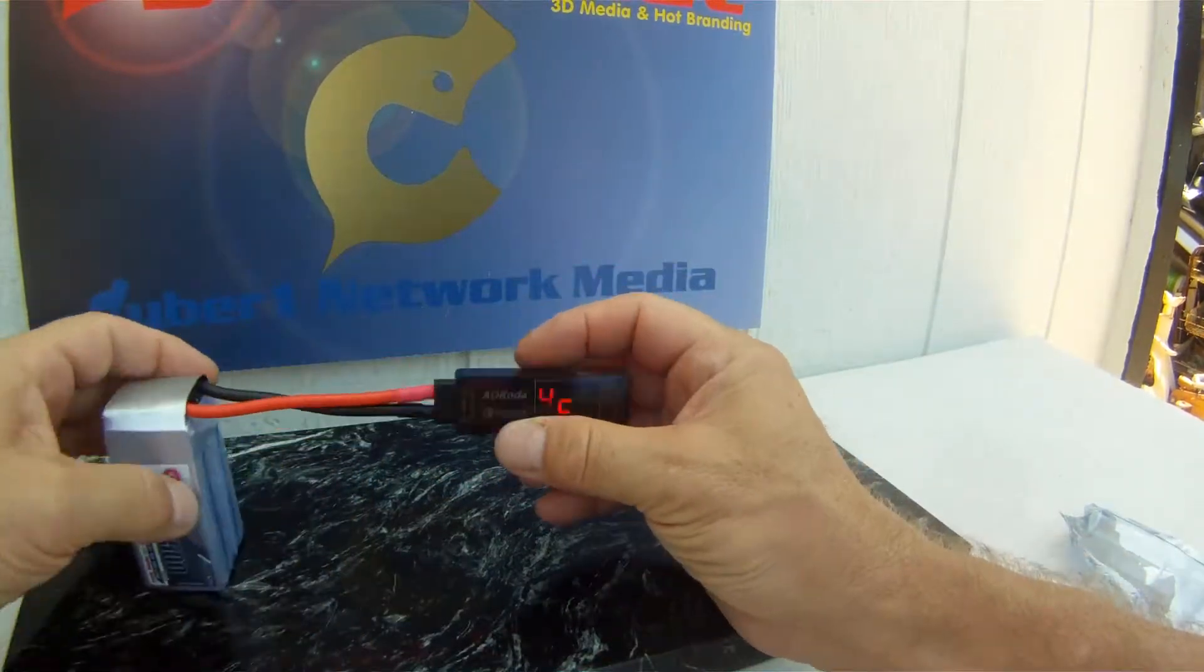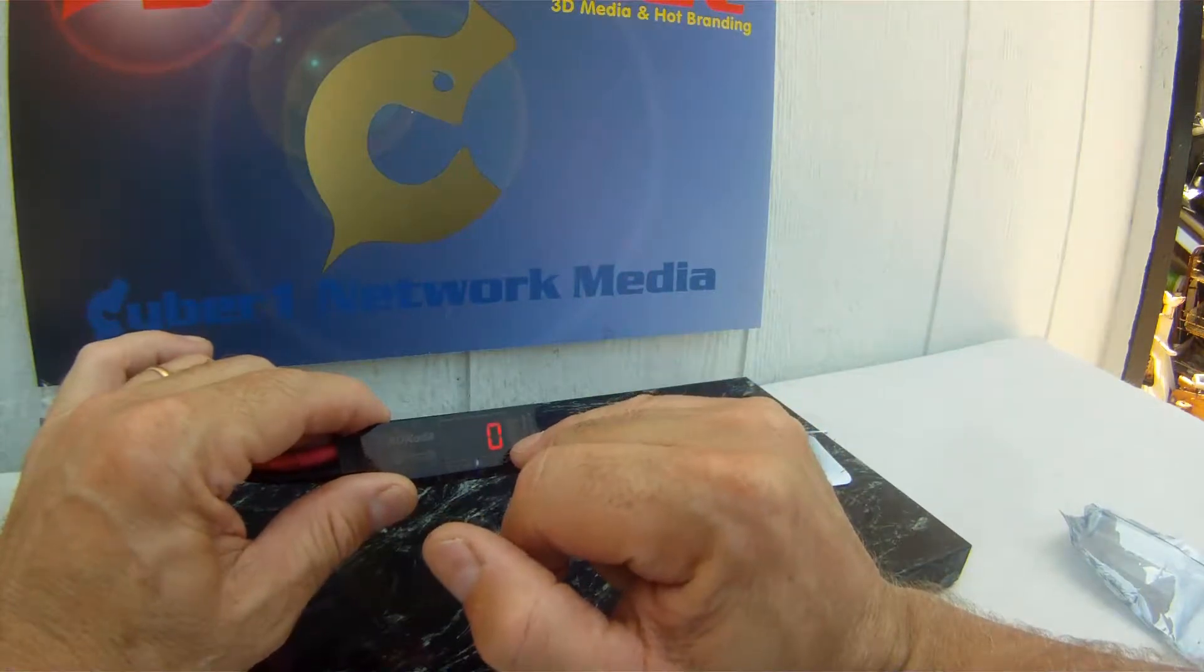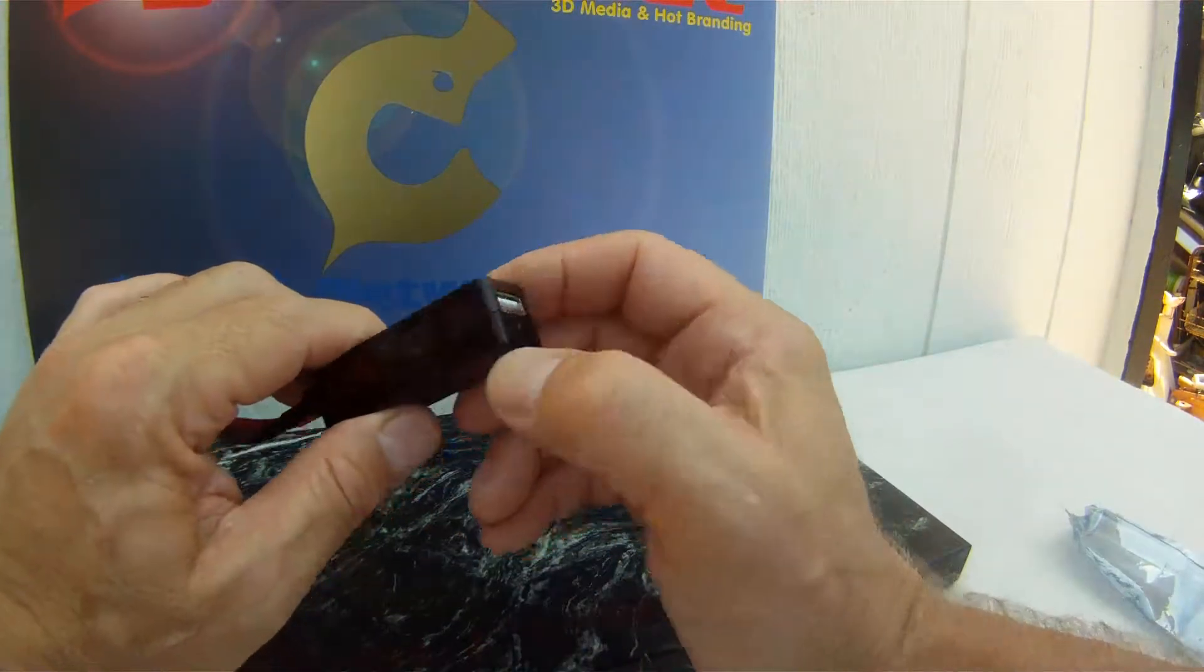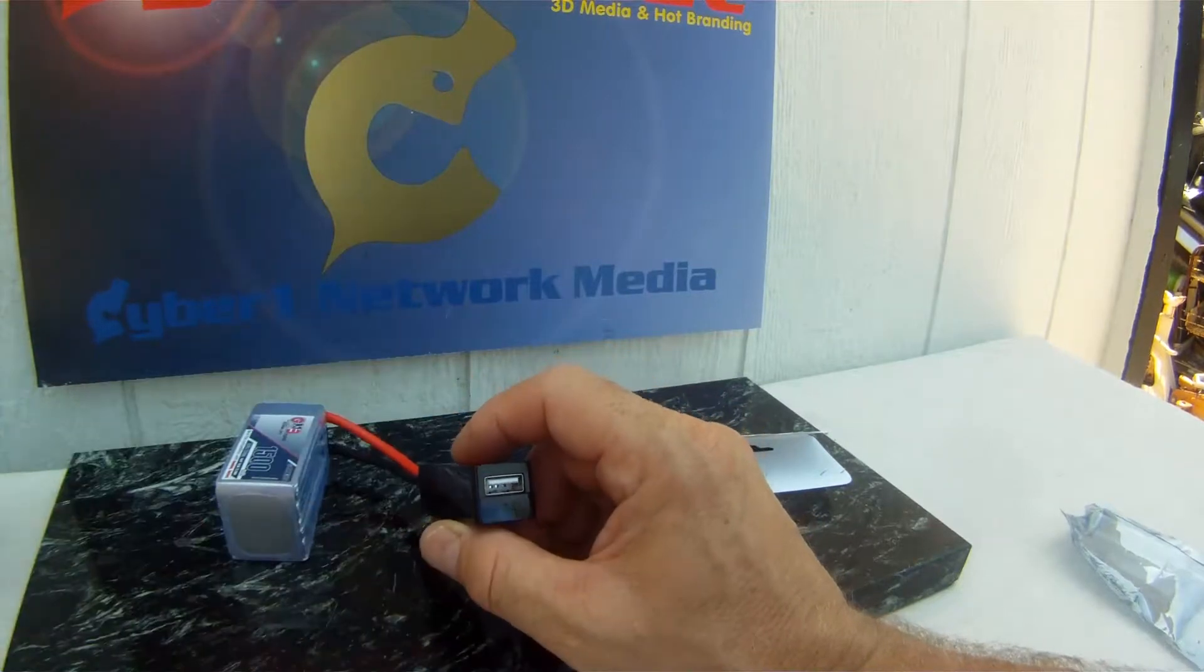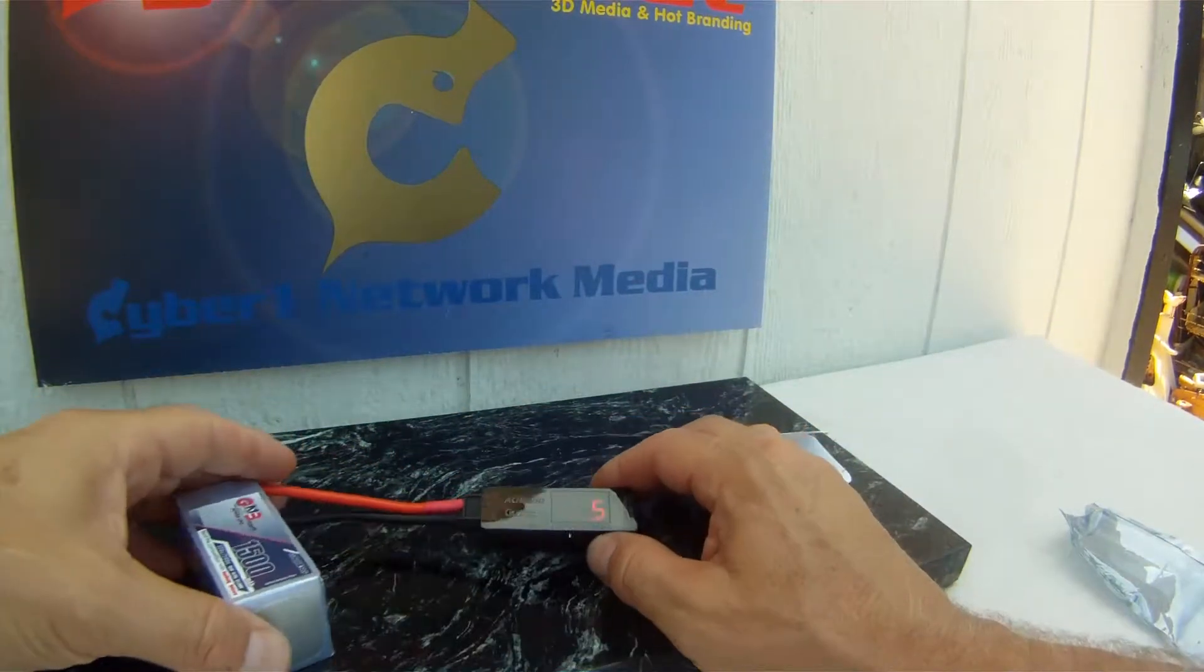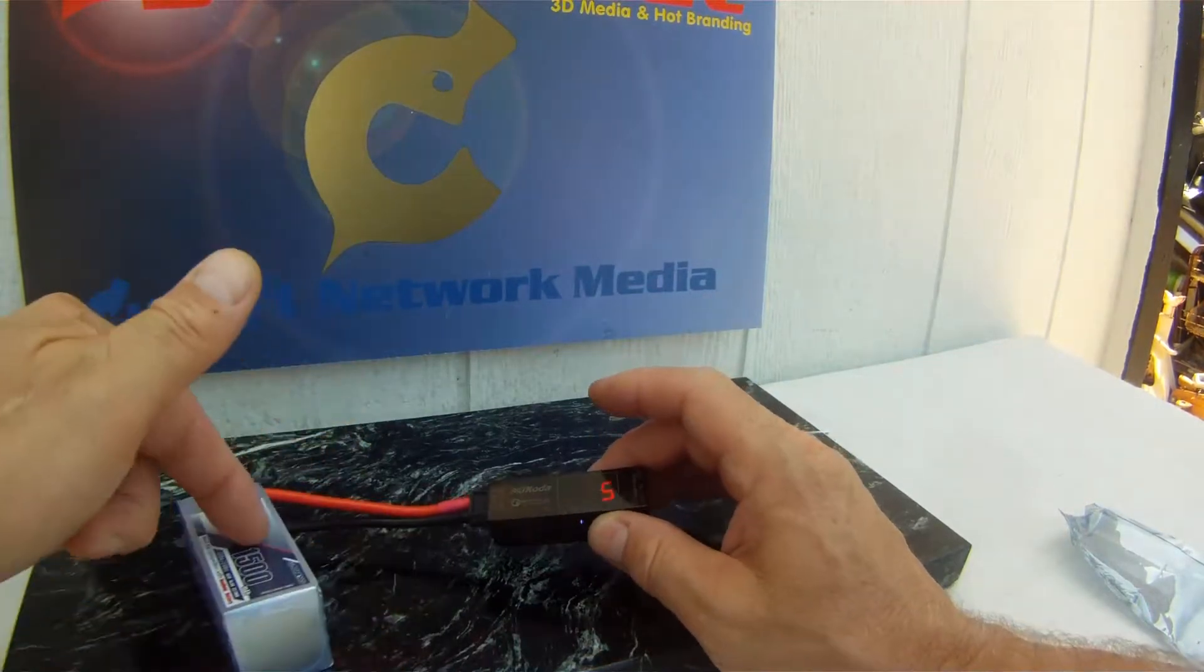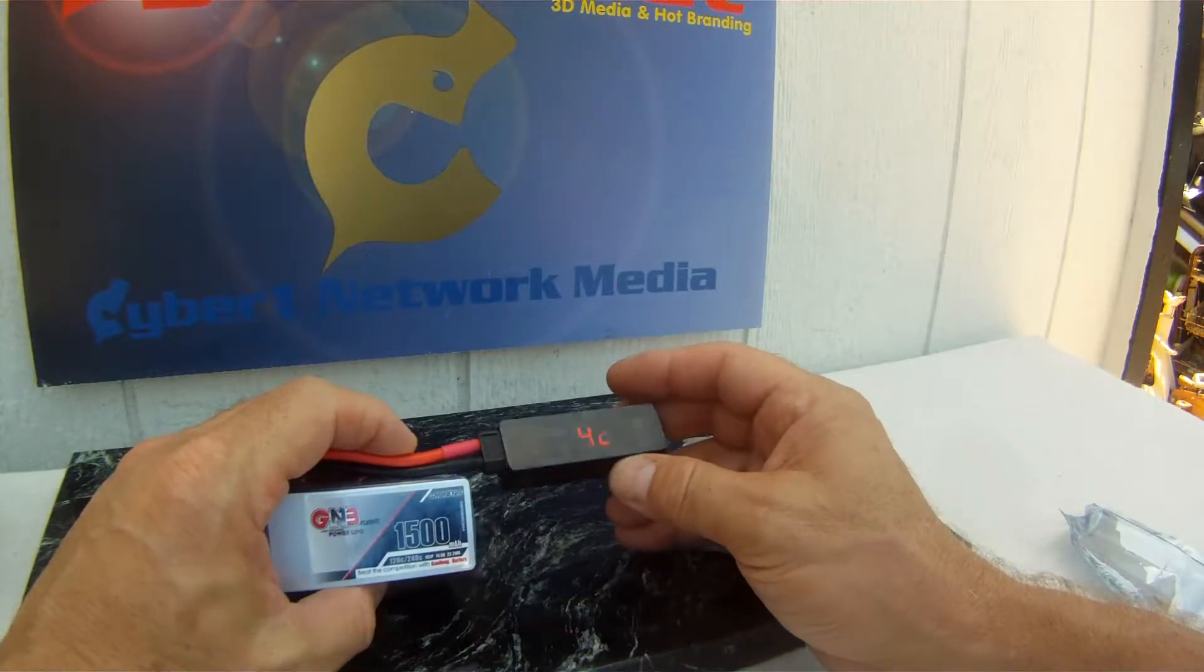When we plug it in, it recognizes that it's a 4 cell and it gives us the total voltage. And then we've got that as an output device for your power bank. So I hope you understand how to use that. We'll see how this works in a few minutes when we give this 1500C a full charge and test this whole unit out.